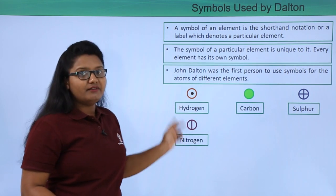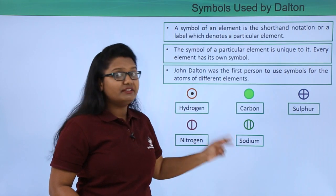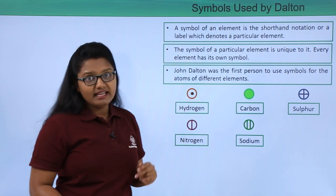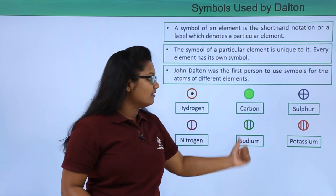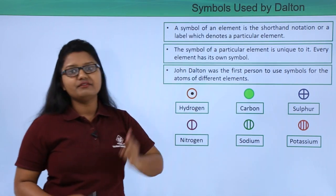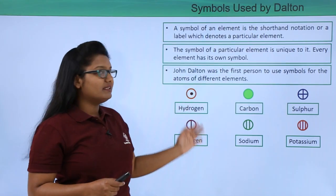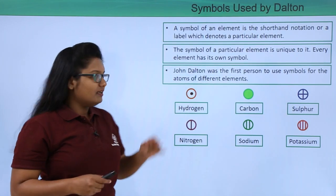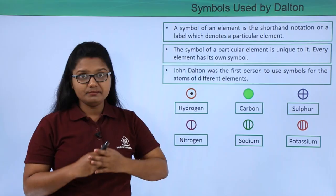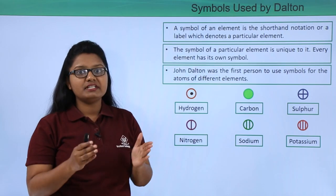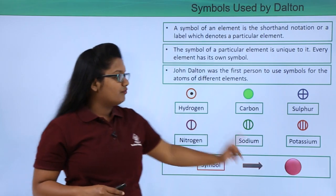A nitrogen atom had a circle with a vertical line inside, a sodium atom was a circle with two vertical lines, and a potassium atom was a circle with three vertical lines. These were the symbols given by Dalton. Whenever he represented elements by their symbols, he also referred to a particular quantity of that element — that is, one atom of that element.